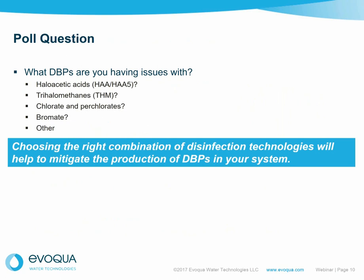In terms of some of the questions: what types of disinfection byproducts do you see? Are you struggling with haloacetic acids, THM families, chlorates and perchlorates, bromates, or something else? This is an interesting question to gauge the kinds of disinfection byproducts that operators are facing.